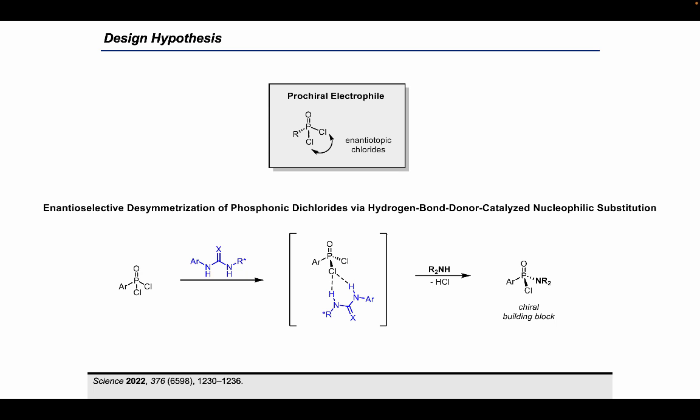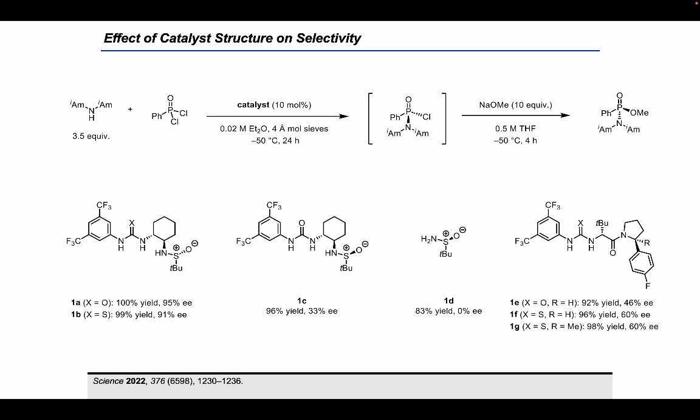Inspired by these catalytic advances and the versatility of the chiral auxiliary approach, we hypothesized that we could develop a versatile catalytic approach to the synthesis of stereogenic-at-phosphorus compounds via hydrogen bond donor catalysis. Specifically, we hypothesized that a chiral hydrogen bond donor catalyst could facilitate the enantioselective desymmetrization of phosphonic dichlorides by selectively hydrogen bonding to one of the two enantiotopic chlorides on the substrate, activating it to undergo nucleophilic displacement by an amine to furnish enantioenriched chlorophosphonamidates as chiral building blocks.